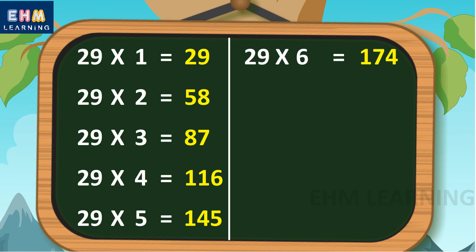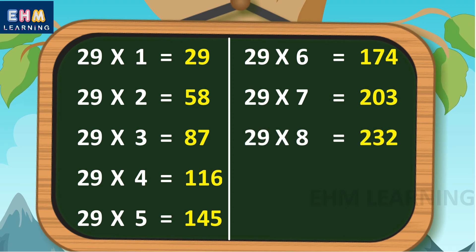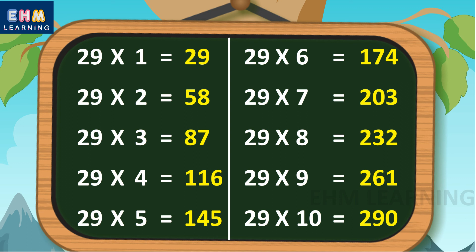29 6s are 174. 29 7s are 203. 29 8s are 232. 29 9s are 261. 29 10s are 290.